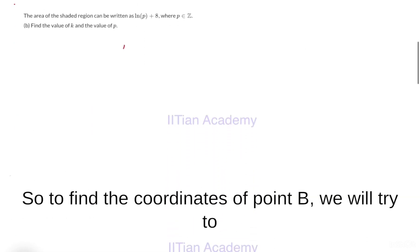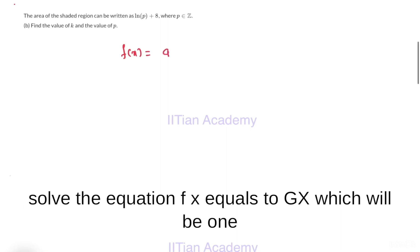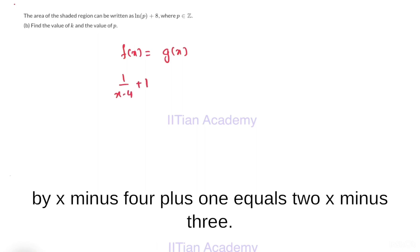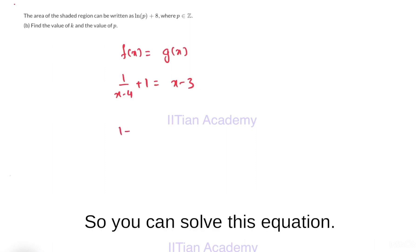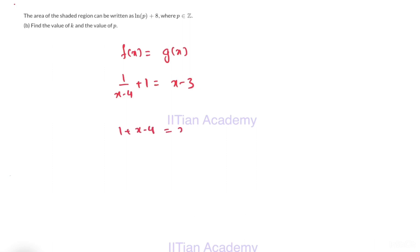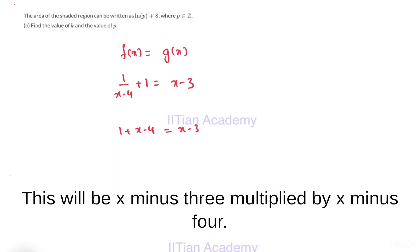To find the coordinates of point B, we will try to solve the equation f(x) = g(x), which will be 1/(x-4) + 1 = x - 3. You can solve this equation — this will be (x-3) multiplied by (x-4).